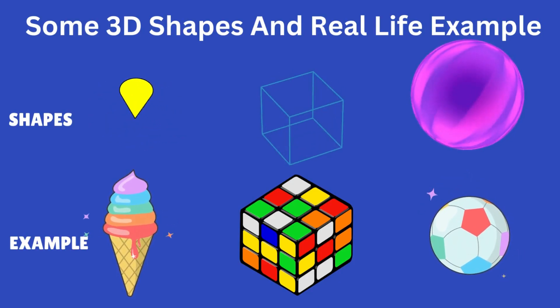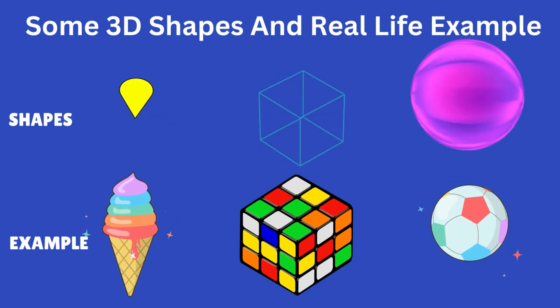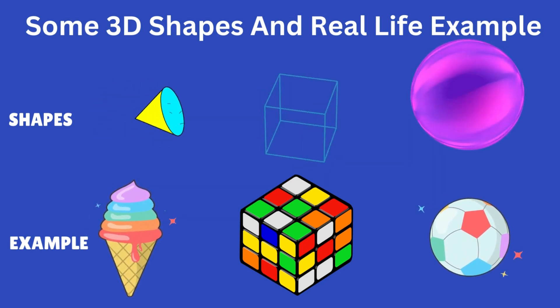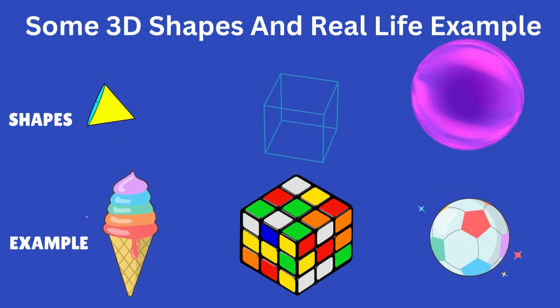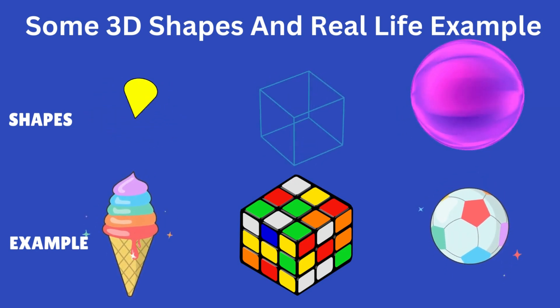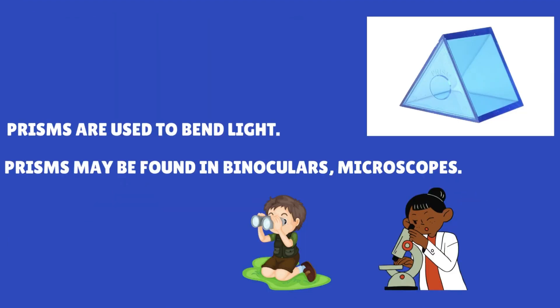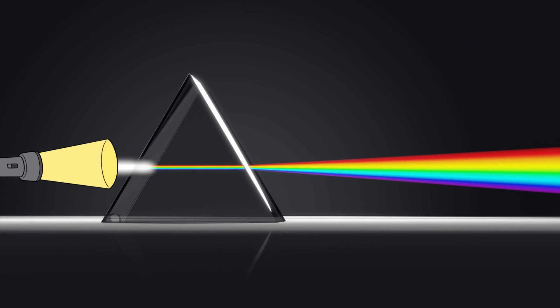Now see these objects: cone, sphere, cube — they are not flat. They are solid objects, so they are called 3D objects. So, as I was saying, a prism is a 3D object. It is used for bending light, meaning when white light passes through a prism, it bends into seven colors at different angles.